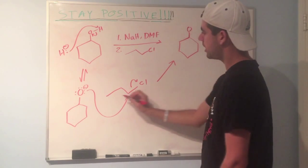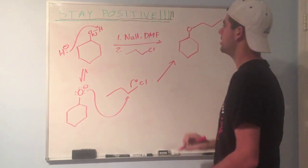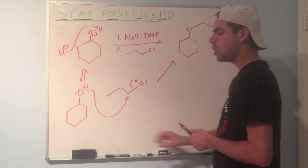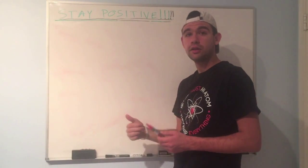And now we can go to our final product. We have our cyclohexane ring, we have our oxygen, and now we have one, two, three carbons attached. Hope you got that. It wasn't too bad. Let's take a look at another example.